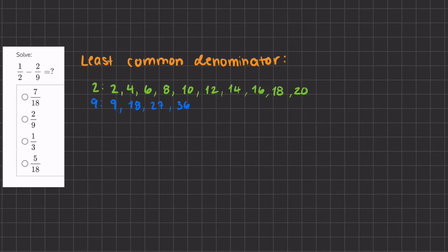Okay, so in this problem we're asked to subtract two fractions, 1 half minus 2 ninths. Now you can tell that 2 and 9 are not the same number, meaning that they don't have a common denominator.